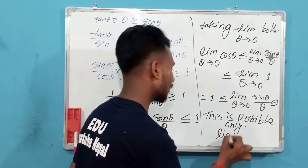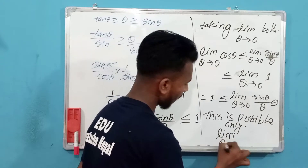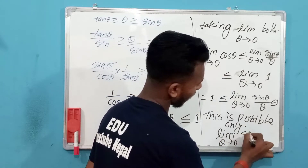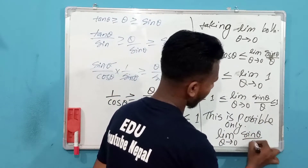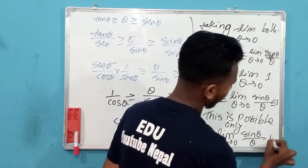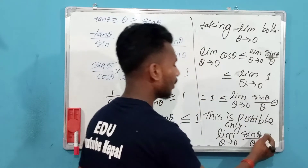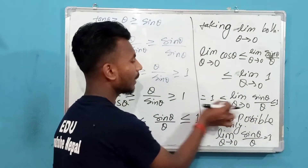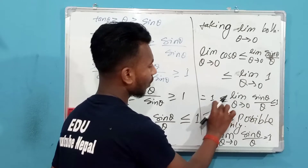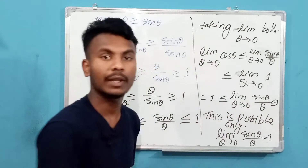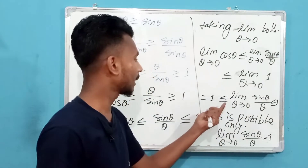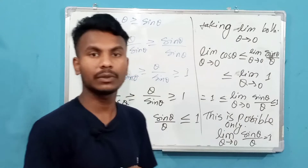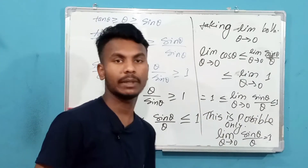Therefore, limit as theta tends to 0 of sin theta divided by theta is equal to 1. By the squeeze theorem, since sin theta/theta is greater than or equal to cos theta and less than or equal to 1, and both sides equal 1, the result follows: the limit equals 1.